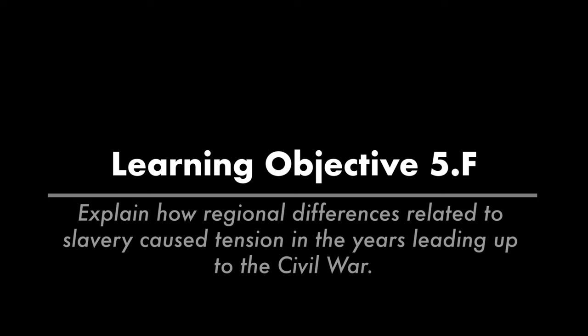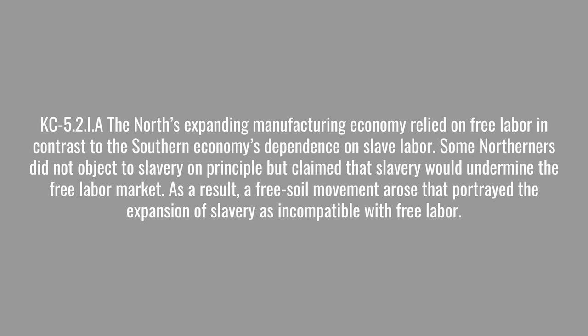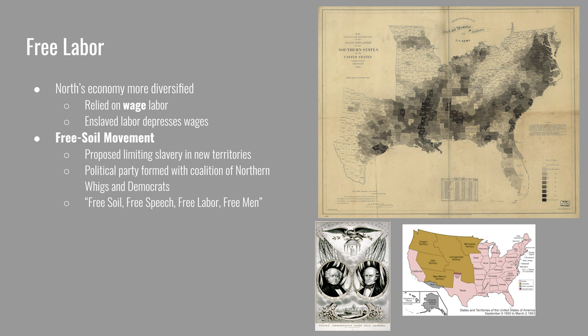The second learning objective is to explain how regional differences related to slavery caused tension in the years leading up to the Civil War. The North's expanding manufacturing economy relied on free labor, in contrast to the South's dependence on slave labor. Some Northerners did not object to slavery on principle but claimed that slavery would undermine the free labor market. The Northern economy was much more diversified — manufacturing, railroads, shipping, banking, finance, and insurance — and for the most part, everyone worked for a wage. Workers especially worried about elements that might pose unfair competition to labor and depress wages. That's why some Northerners disliked slavery: not necessarily on moral grounds, but on economic grounds that it would hurt the Northern economy.